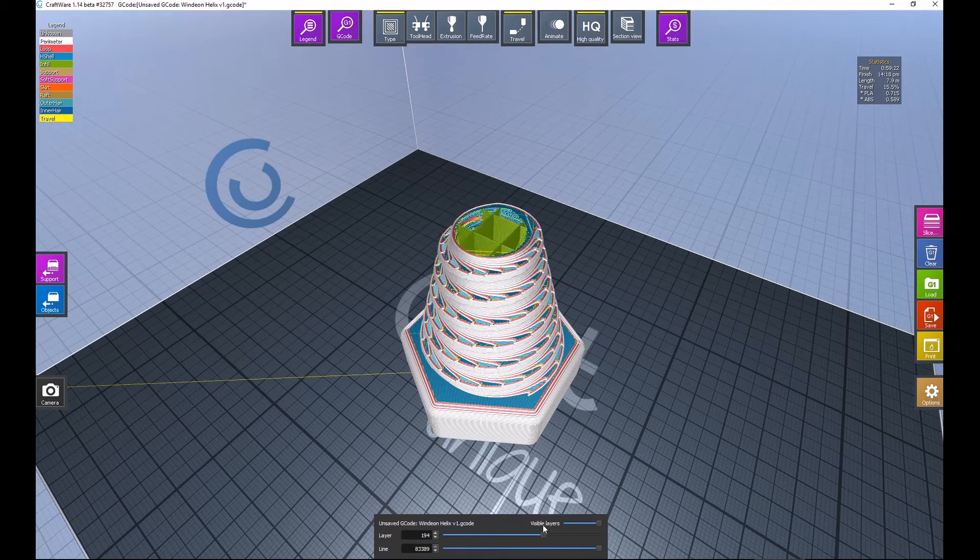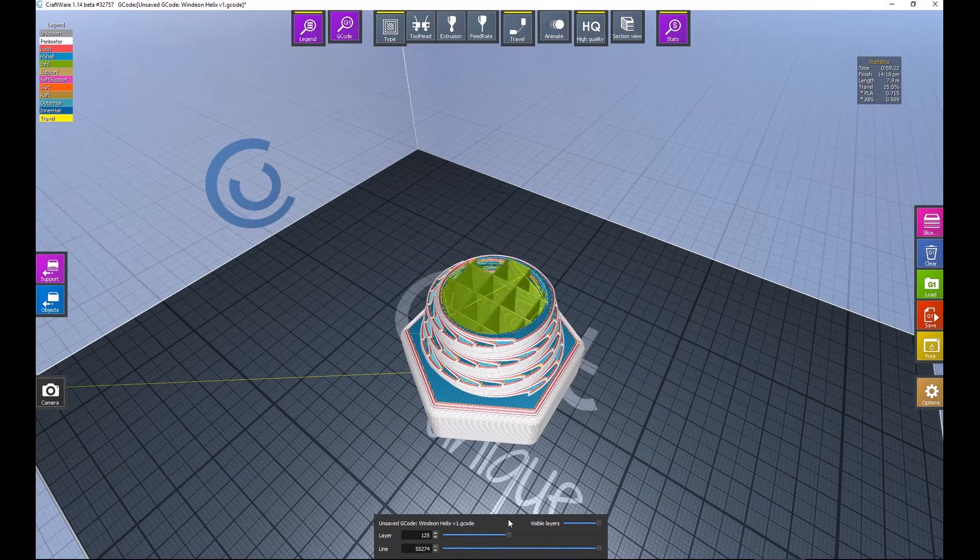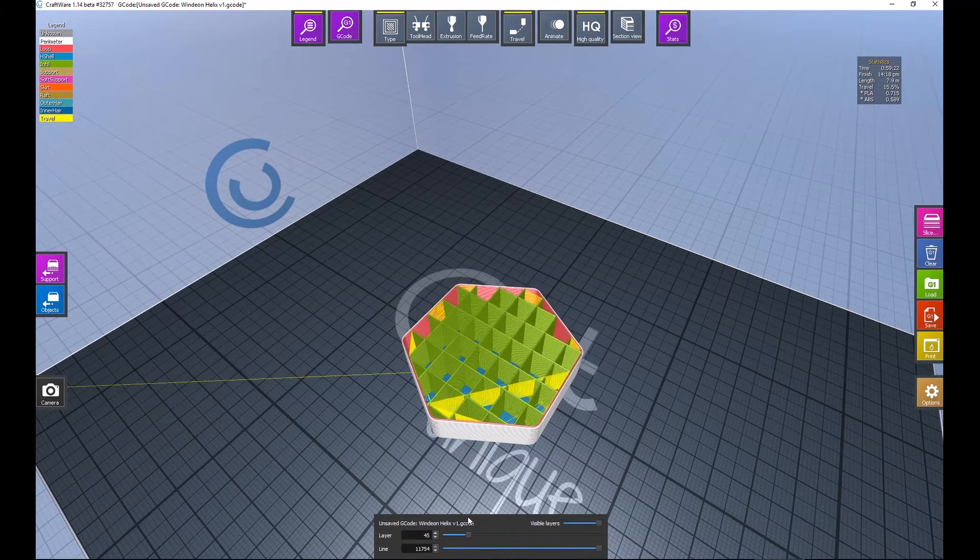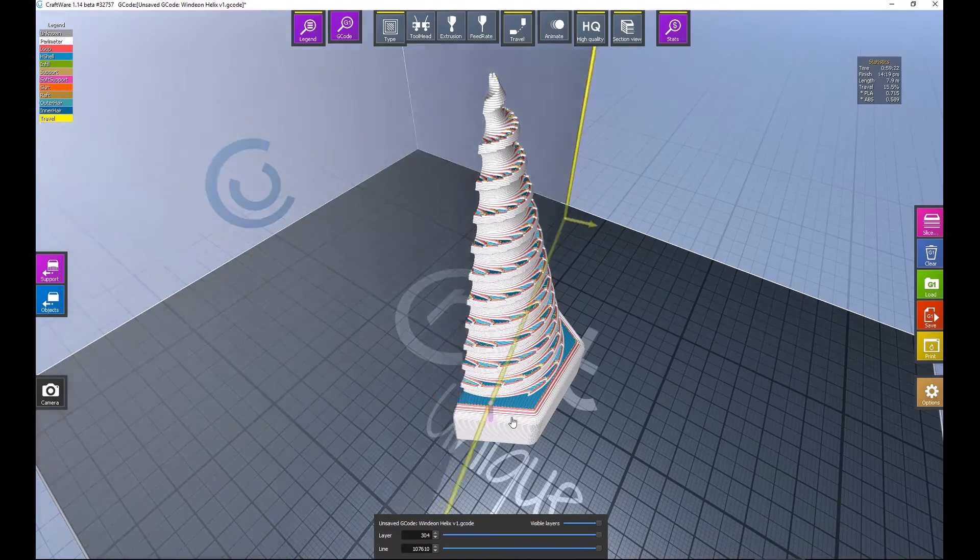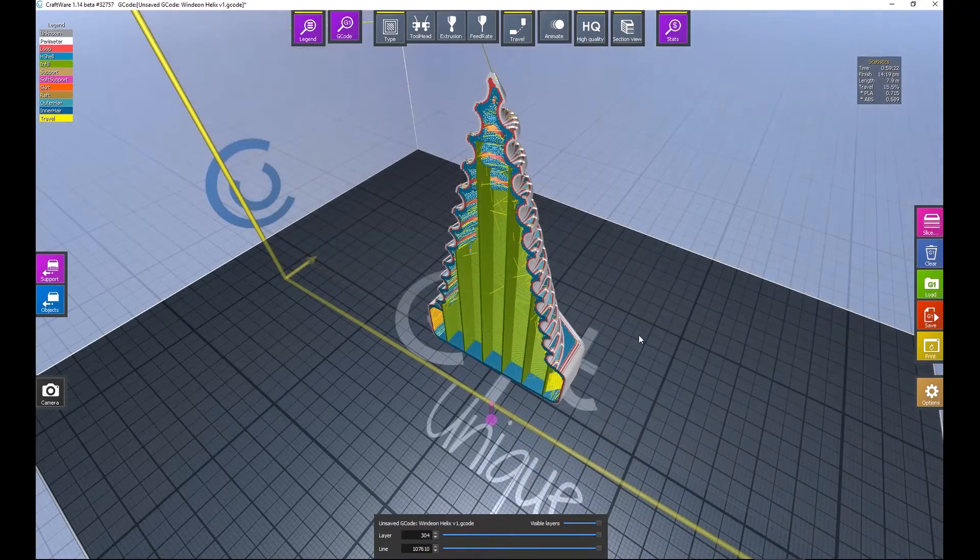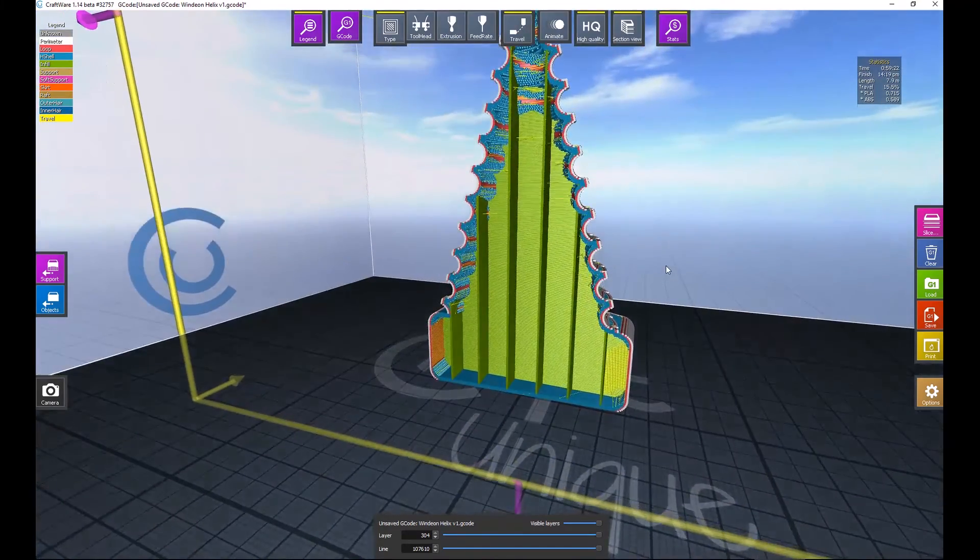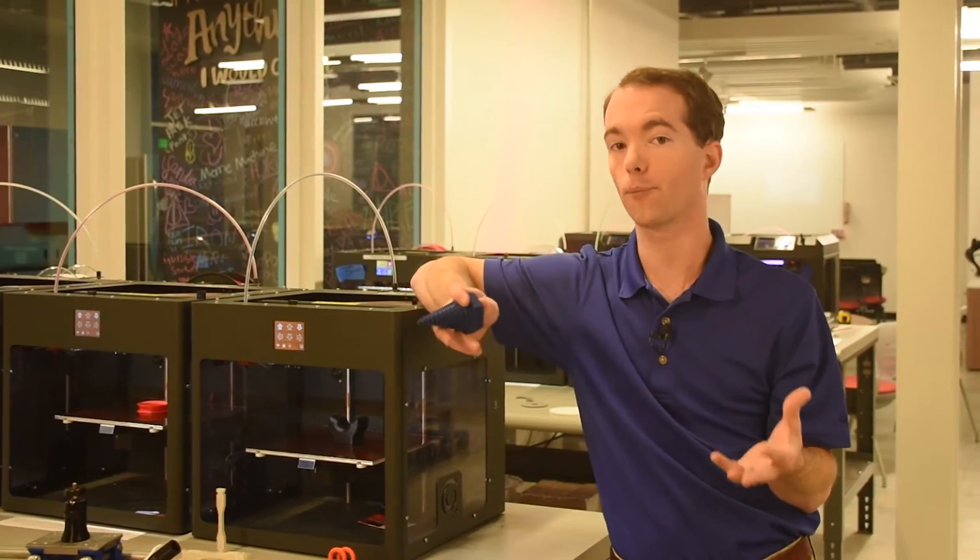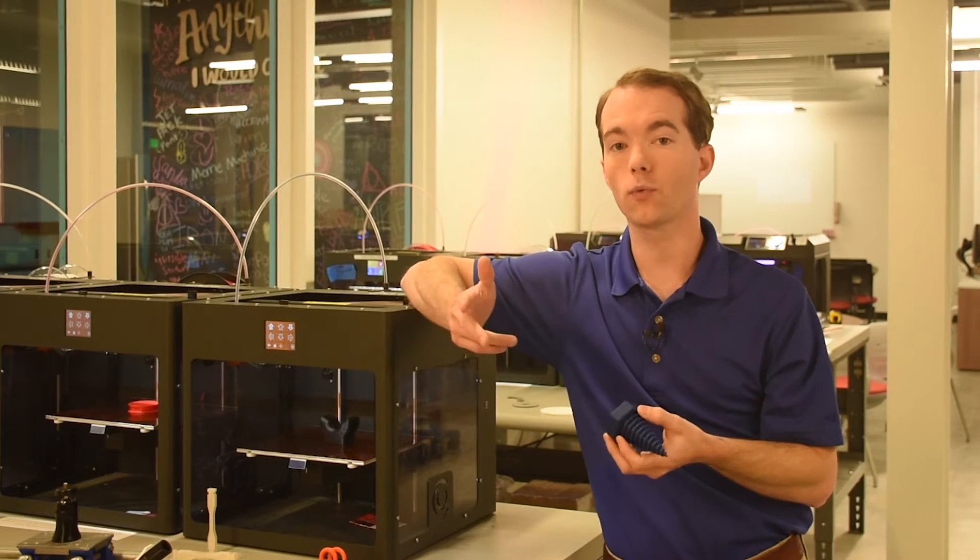The slicer will allow you to scroll through the layers and then take a look at how your part is being built. I recommend you always have a look at the layers because you just might find some trouble spots or glitches in the code that would prevent your part from printing.